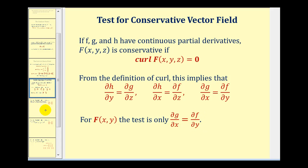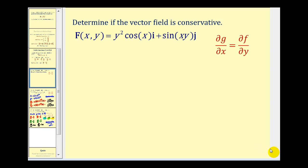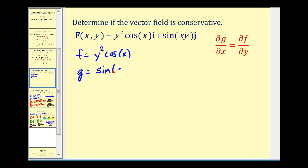Let's take a look at our examples. We want to determine if the given vector field is conservative. Notice this vector field is in R2, or two-dimensional, so we only have to determine if the partial of g with respect to x is equal to the partial of f with respect to y. Here f is equal to y squared cosine x, and g is equal to sine of xy. We'll first test the partial of g with respect to x, treating y as a constant. The derivative of sine(xy) gives cosine(xy), and since y is a constant, the derivative of xy with respect to x is just y, so we get y cosine(xy).